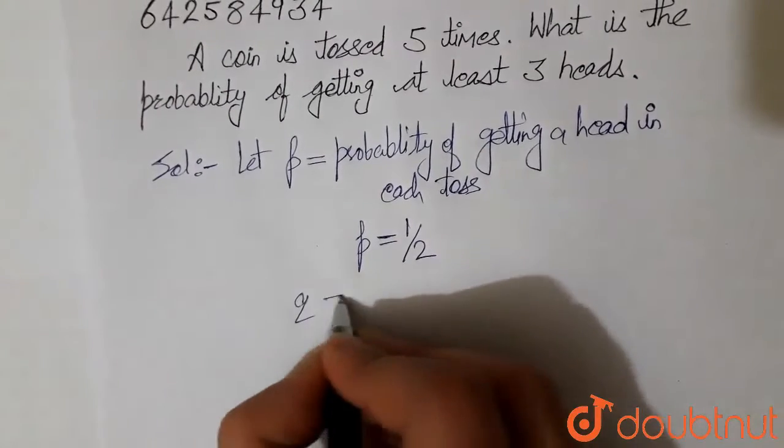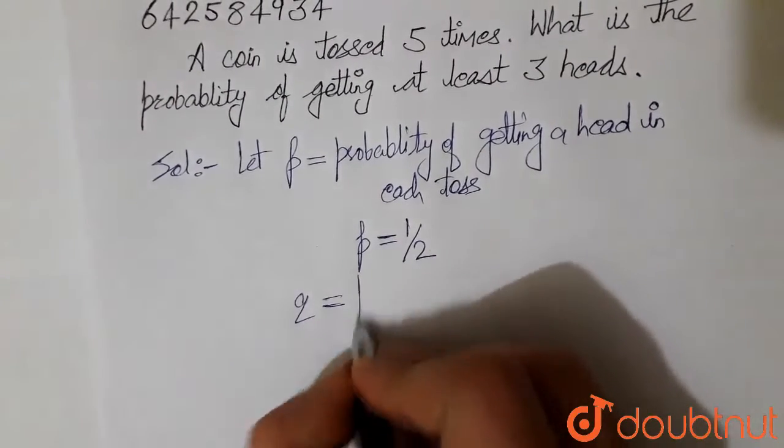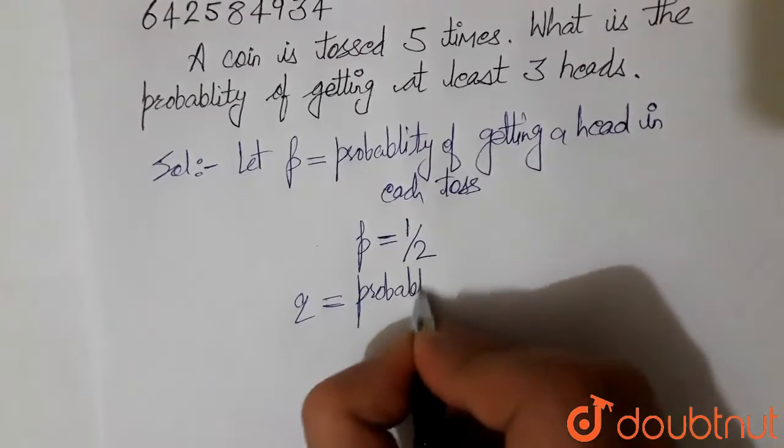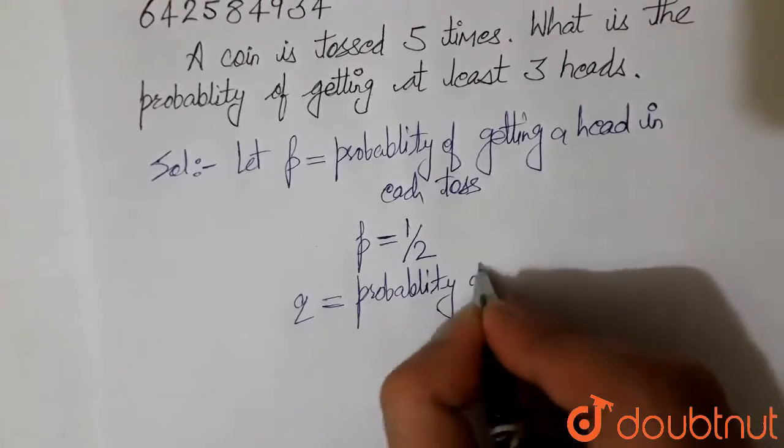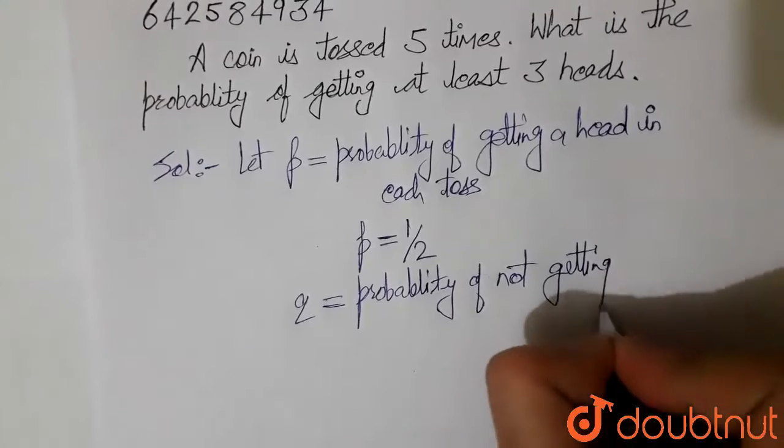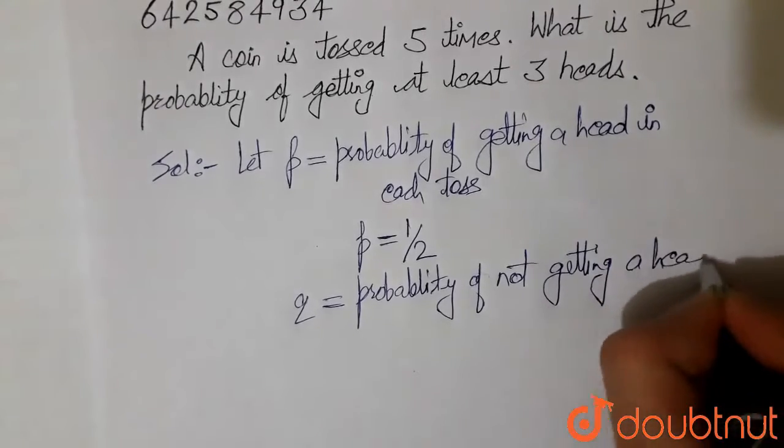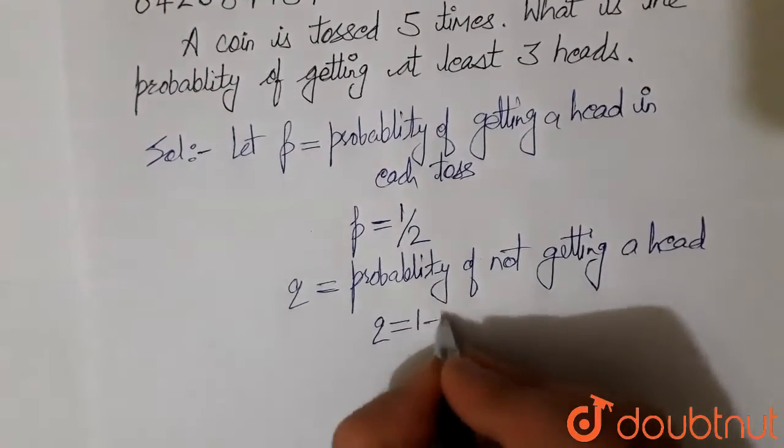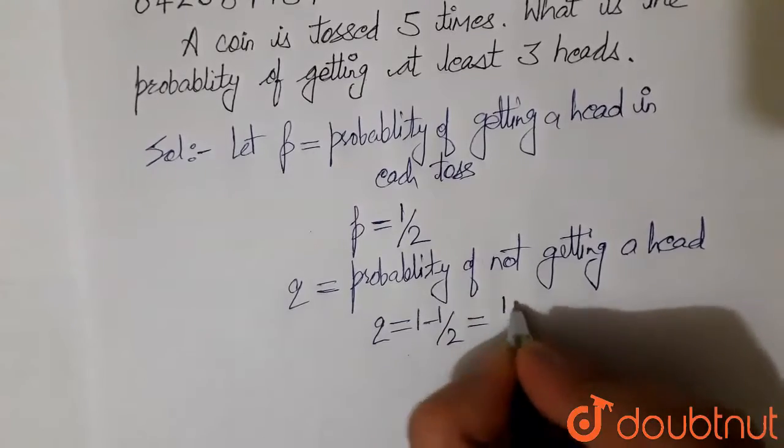Similarly, let q equal the probability of not getting a head. So q is simply 1 minus 1 by 2, that is 1 by 2.